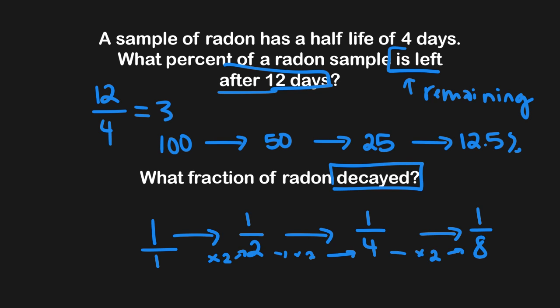One-eighth represents the amount remaining. To figure out the amount that has decayed, we take one minus one-eighth. We can think of one as eight over eight, so eight over eight minus one-eighth equals seven over eight. So the fraction of radon that has decayed is seven-eighths of the sample.